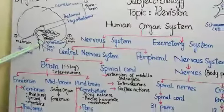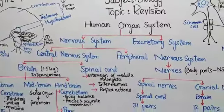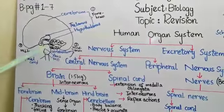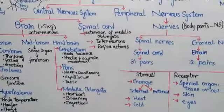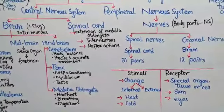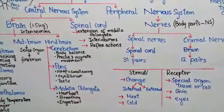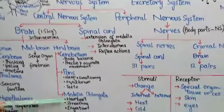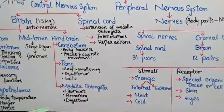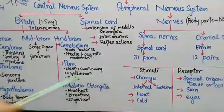Next is the pons. The pons is an oval structure located under the midbrain, above the medulla oblongata. It controls sleeping, swallowing, and intake functions. It also helps in maintaining body balance and controlling taste. The last part of the hindbrain is the medulla oblongata. It controls involuntary actions such as breathing and digestion — functions that are not under our conscious control.